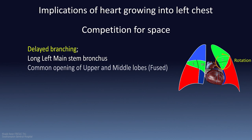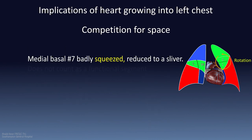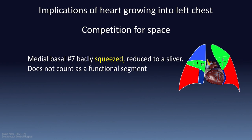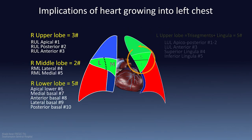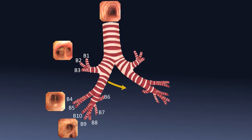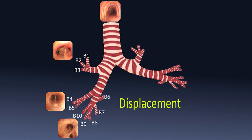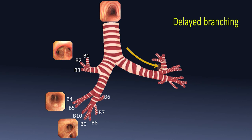The tight space forces delayed branching of the bronchi. This is obvious with the upper division bifurcating into two bronchi instead of three, one of the divisions exhibiting the phenomenon of two bananas in one skin — the apicoposterior bronchus. The pushing and squeezing is maximum on the left lower lobe. Subsequently, the medial basal segment LS7 is completely squashed into a thin sliver and functionally can be ignored. Therefore, the left lower lobe has four instead of five segments. The left main bronchus is also longer than the right and attains a more horizontal orientation.